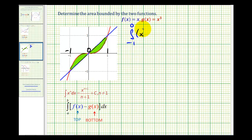Again, that's the top function minus the bottom function plus the definite integral from zero to one. But now the top function is going to be the line so we'll have x minus x cubed.